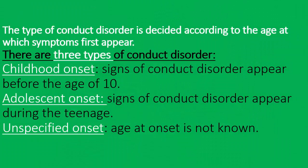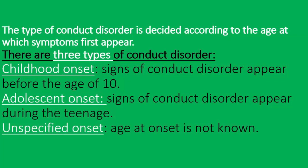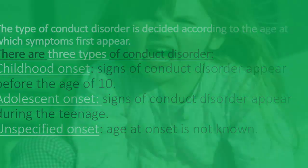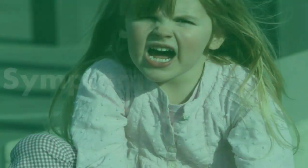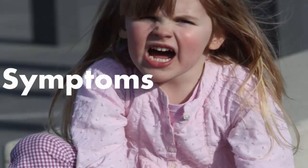There are three types of conduct disorder. Childhood onset: signs of Conduct Disorder appear before the age of 10. Adolescent onset: signs of Conduct Disorder appear during the teenage years. Unspecified onset: age at onset is not known.